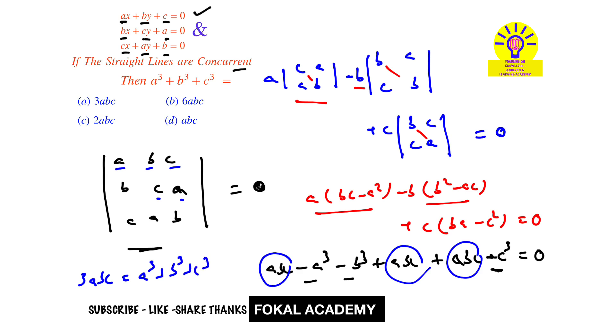Here we want the value of a³ + b³ + c³, so we got 3abc. From the options, option C is the correct option. This is the process of simplification. Thanks for watching, please subscribe, like, share, thanks.